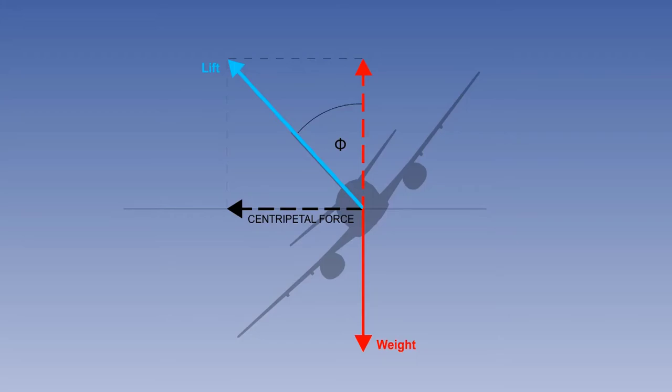As you can see from the diagram, with the aircraft banked, the lift vector is also tilted and it is the horizontal component of lift which causes the aircraft to turn by providing the centripetal force.